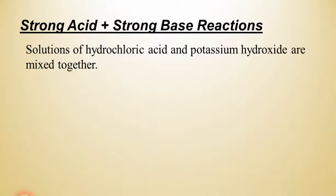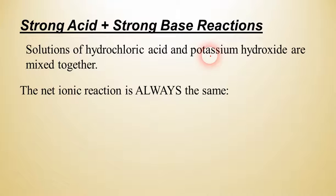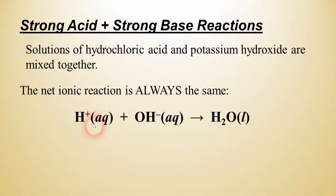Now, anytime you have a strong acid and a strong base react with each other, as we have in this example where hydrochloric acid and potassium hydroxide react, we always want to realize that the net ionic reaction is always going to be the same. And there aren't too many things that are always in chemistry, in AP Chemistry, but this is one of them. This will always be the net ionic reaction for a strong acid, strong base.